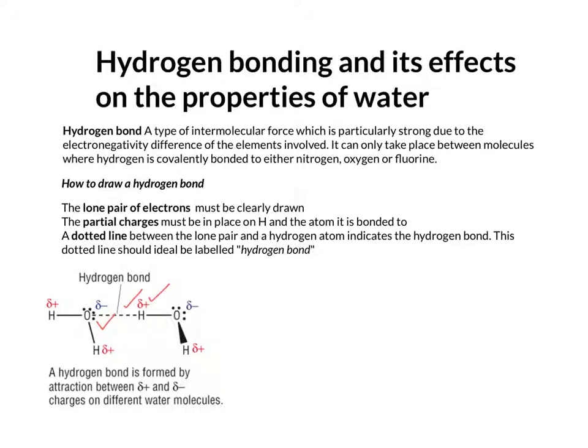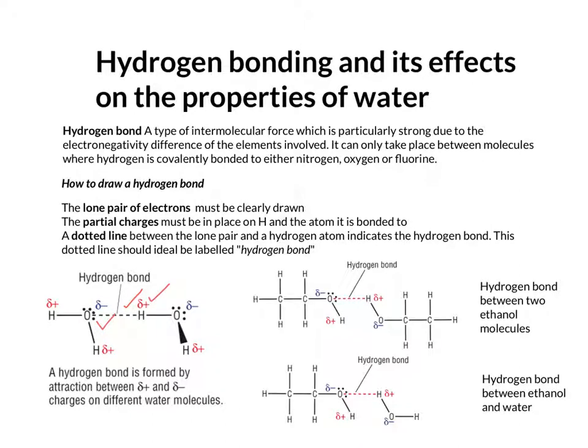Let's have a look at a couple of other examples of what it might look like if it wasn't just two water molecules. You could have, for example, a hydrogen bond between two ethanol molecules, or a hydrogen bond between ethanol and water.